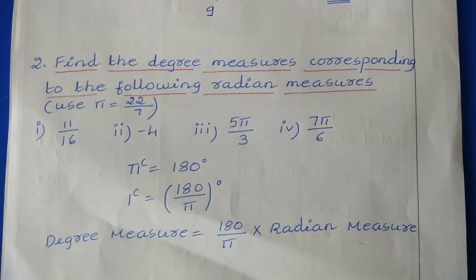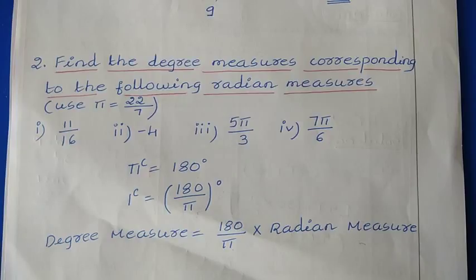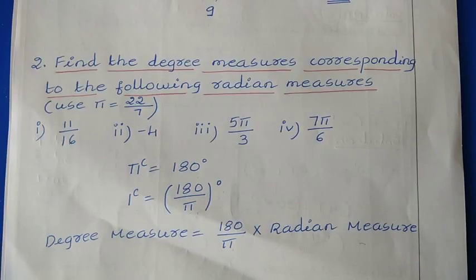Hi students, welcome to the channel NCR Team and Tutor. If you like this video, please click the like button, share and subscribe. In this video, I am explaining the solution of Exercise 3.1, Chapter 3, Trigonometric Functions — question number 2: Find the degree measures corresponding to the following radian measures.